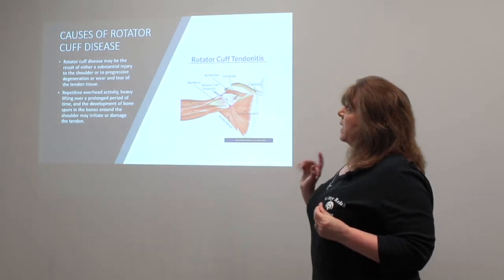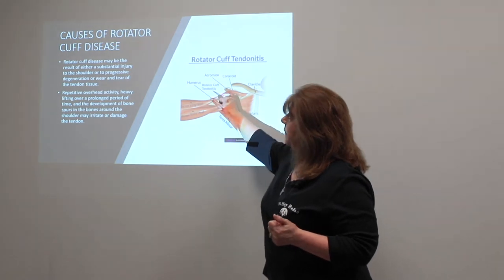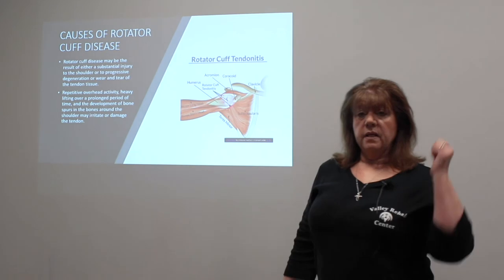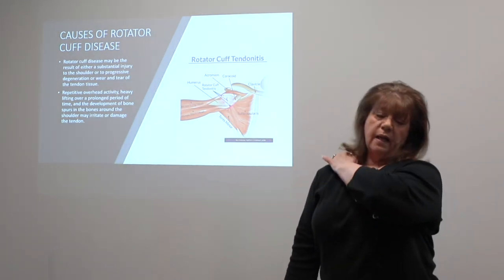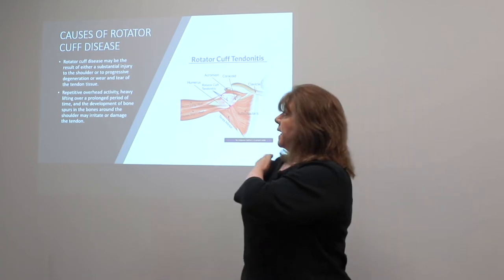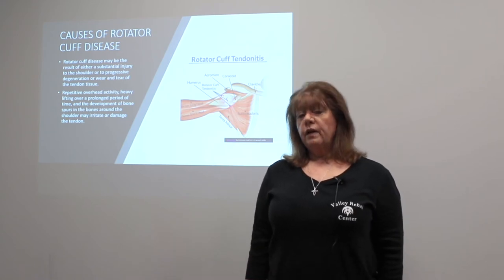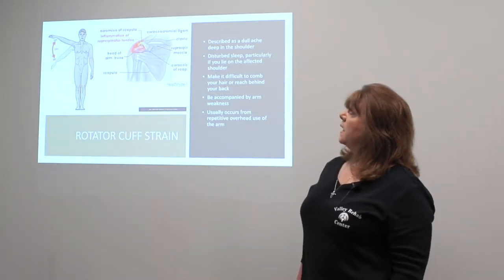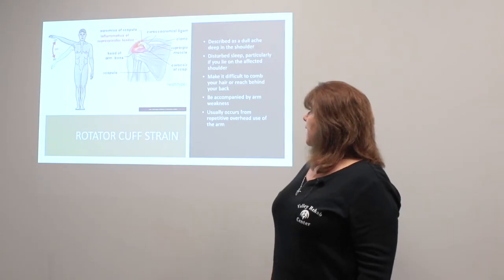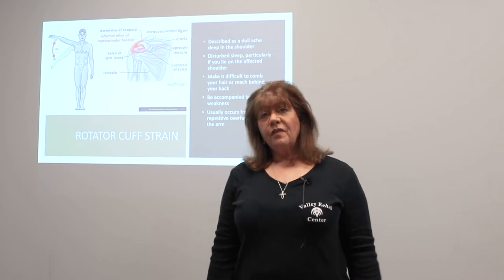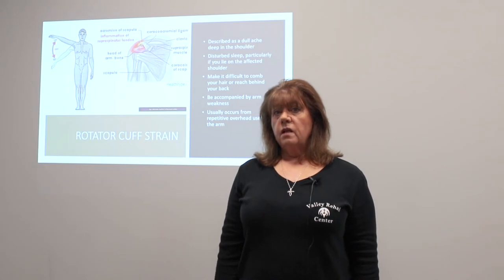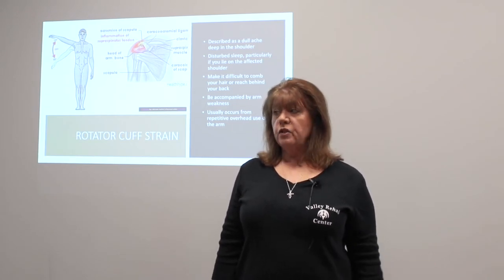The muscle that most often gets torn is the supraspinatus because it runs right through this area. People will often report pain radiating up into the neck or shoulder area. If you have a true rotator cuff tear, you are going to have difficulty raising your arm. You'll have a dull ache deep in the shoulder. Most people with a rotator cuff tear say they can't sleep on that side, and they have difficulty combing their hair or reaching behind their back — like to reach their back pocket. You could have some weakness in your arm as well, and it usually occurs from overhead use.